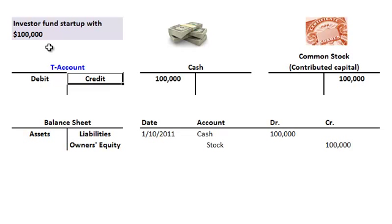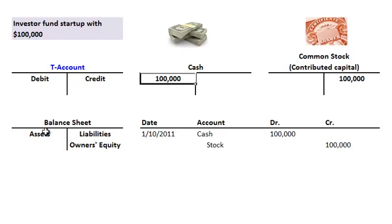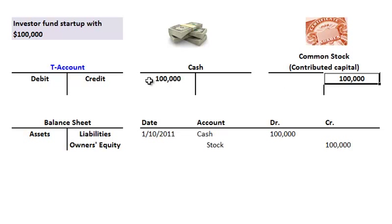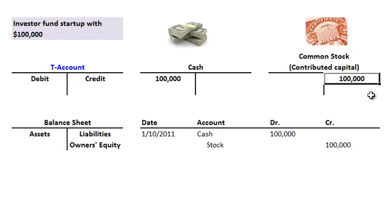Let's take some examples and pretend we're starting a company that's going to manufacture and sell books. We're lucky enough to get started with some investor capital — our investors are going to fund our startup with $100,000 in seed capital. So that's our first transaction: $100,000 received. Cash is an asset account, so it's a debit of $100,000 to cash. Common stock or contributed capital is going to be an owner's equity account, and we're going to credit that also by $100,000.